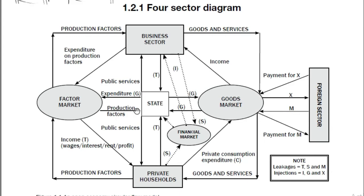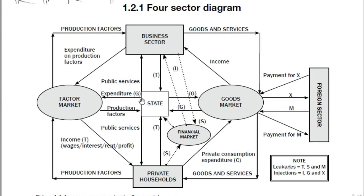Now let's go to the state. The state refers to local, regional, and national government. The state provides households and businesses with public goods and services, as shown by these lines. The state receives taxes from households in the form of income tax and also receives taxes from businesses in the form of company tax. The state spends money in the economy on goods and services and also on the factor market.